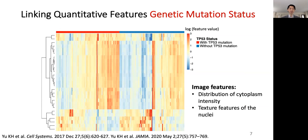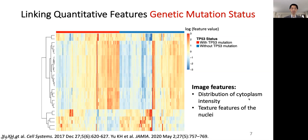We also extend the model to predict gene mutation status just by looking at the slide. We develop a machine learning system to systematically examine our extracted image features and identify which are associated with the mutation status of the TP53 gene, an important tumor suppressor. After correcting for multiple tests, we can identify a few image features associated with mutation status, including the distribution of cytoplasmic intensity of the pixels and the texture features of the nucleus regions in our pathological scans. We show that these features are reliable predictors of the TP53 mutation status.